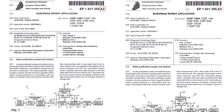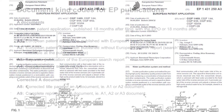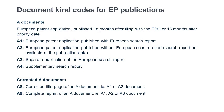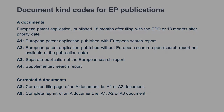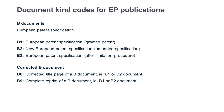However, this wouldn't be obvious without knowing the meaning of the document kind codes A2 and A3 respectively. As mentioned before, there are further kind codes both for A and B publications which you can see here — for example, corrections of the title page or a complete reprint of an A publication or of a B publication.